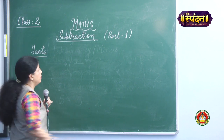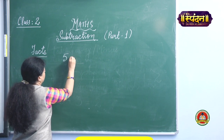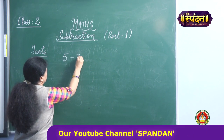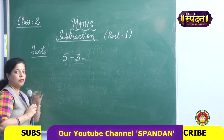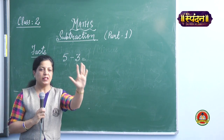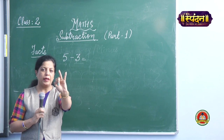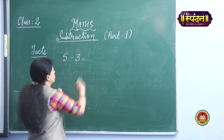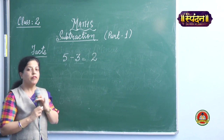For example, 5 minus 3 is equal to how many? 5 minus 3 — I will take away 3: 1, 2, 3. So how many are left with me? 2. This I am showing you with fingers.